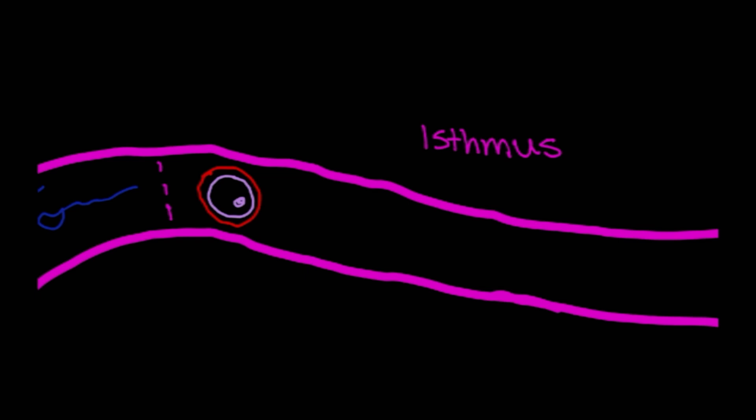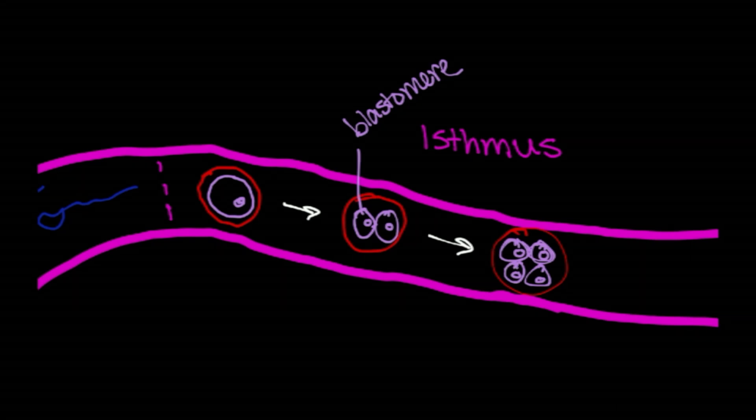The zygote then undergoes a series of mitotic divisions. There's our zona pellucida again. So it's dividing. It'll divide again. Now there are four cells. These series of divisions, also called cleavage, result in the formation of blastomeres. So we've got two blastomeres here and then four blastomeres here.